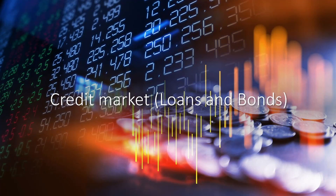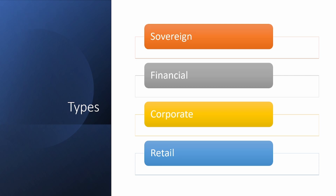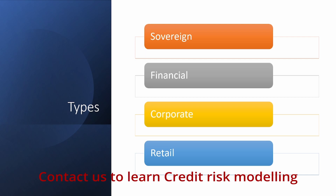We will learn about the basics of the credit market in this video, covering both loans and bonds. The credit market is a market where people raise money or get credit. It's as simple as that — you go to a bank to get money. It is loosely defined as a credit market, and it is of four types. The first is sovereign, meaning countries are interested in raising money.